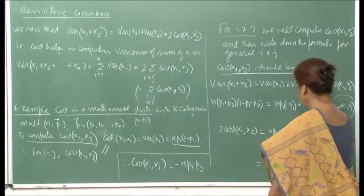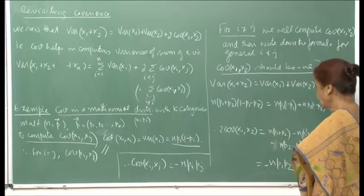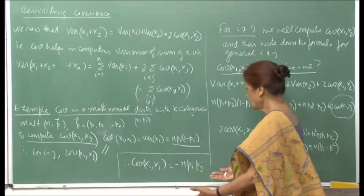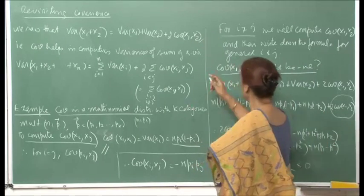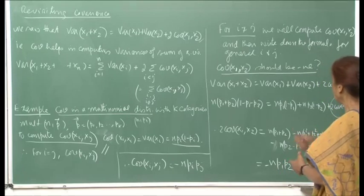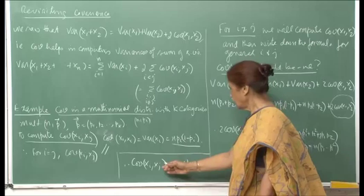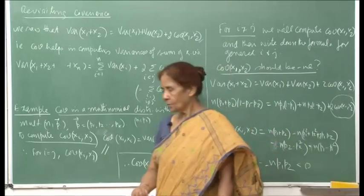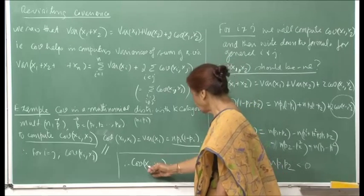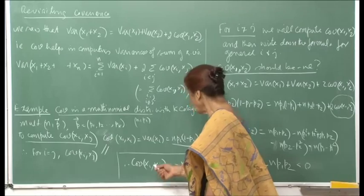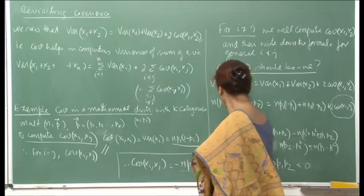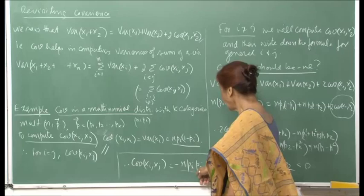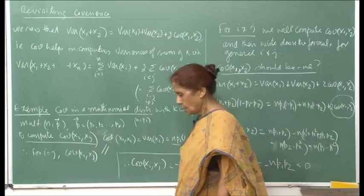Once we know Cov(X₁, X₂) = −n·p₁·p₂, we can immediately generalize: Cov(Xᵢ, Xⱼ) = −n·pᵢ·pⱼ for the multinomial distribution. The correlation coefficient will also be negative: ρ(Xᵢ, Xⱼ) = −n·pᵢ·pⱼ divided by √(n·pᵢ(1−pᵢ)) times √(n·pⱼ(1−pⱼ)), and this computation becomes very simple.